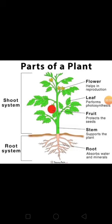Parts of a plant. Students, look at this picture. You will observe two main parts in the plant: root system and shoot system. The part which remains under the ground is called the root system, and the part that grows above the ground is called the shoot system. Below the soil we have roots, and above the soil we have the main stem.